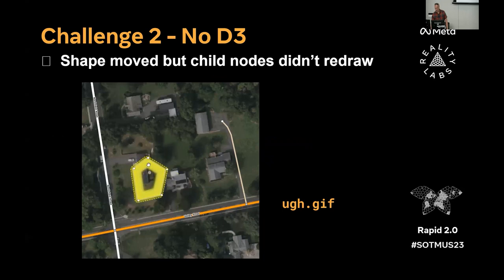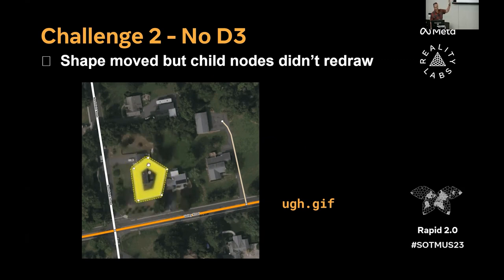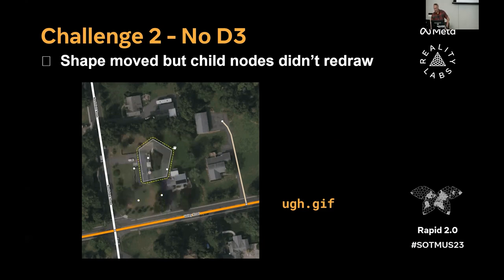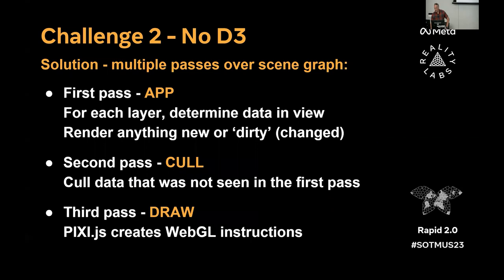It would manifest itself in bugs like: we moved the thing around and the child nodes just don't go with it. The funny thing was that the child nodes were actually getting updated — they just were not getting redrawn because we didn't have a thing that said 'this has to get redrawn as well.' The solution was to add more sophistication into our rendering code to replace some of the work that D3 was doing for us before.